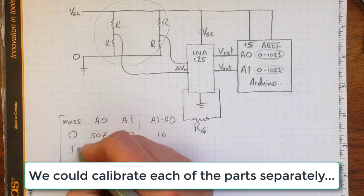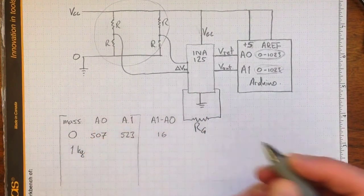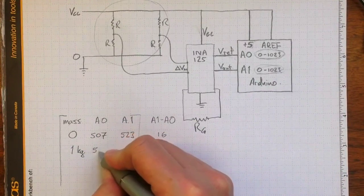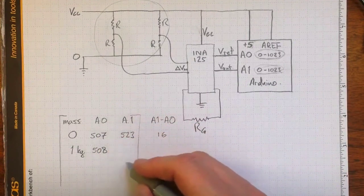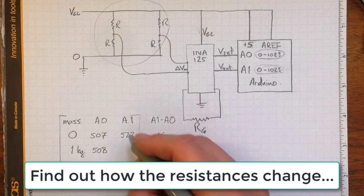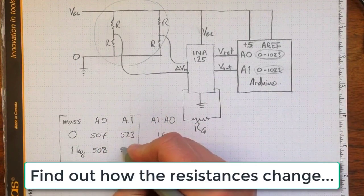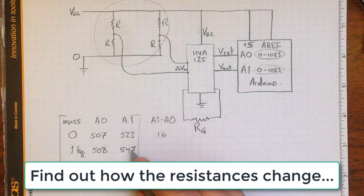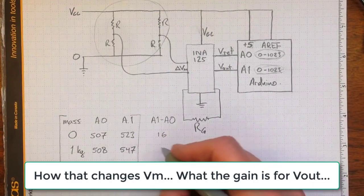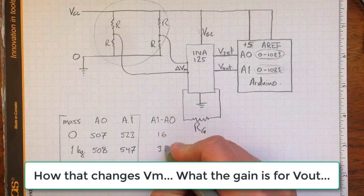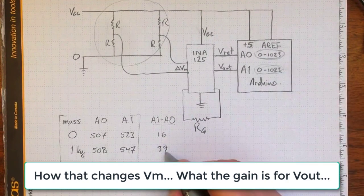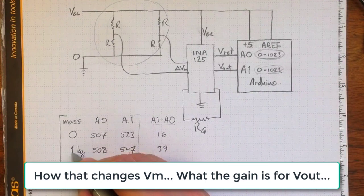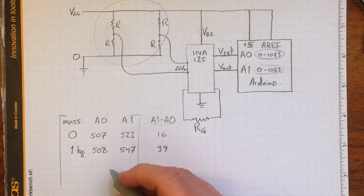If we go up to 1 kilogram, we might find that A0 when we measured this time was 508. It's just normal variation, it should stay pretty much the same, but we might find that A1 was 547. 547 minus 508 leaves me with 39. So a difference in digital conversion values of 39 corresponds to a mass of 1 kilogram on the end of the cantilever beam.